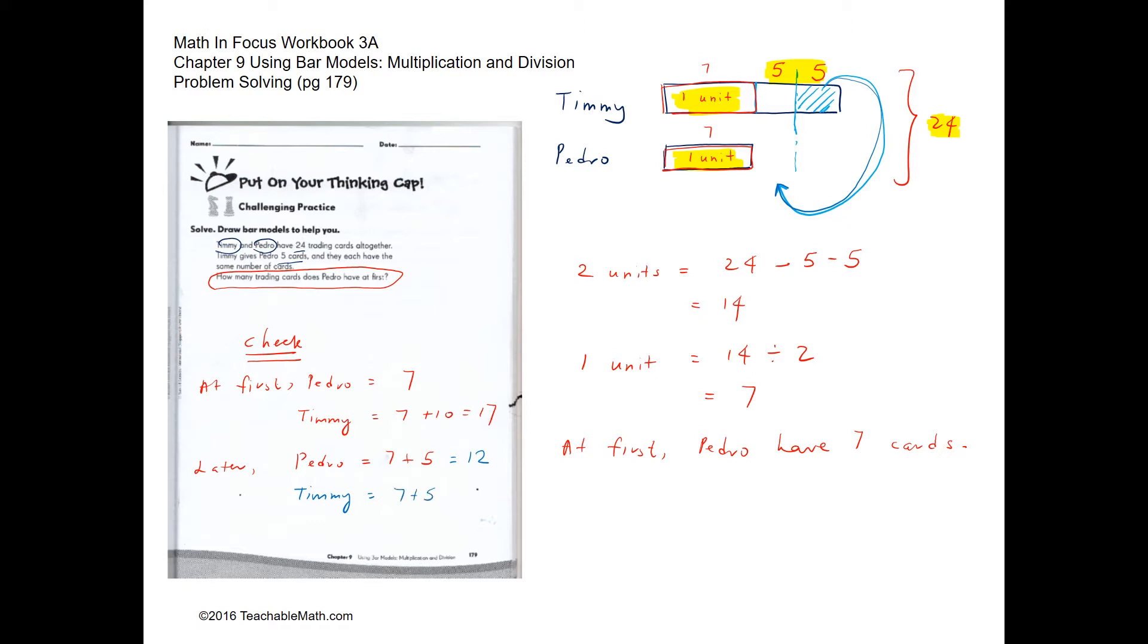And how much would Timmy have? Timmy would have only 7 plus 5, which is also 12, because he has given the 5 away to Pedro. So in this case, 12 and 12 also make 24, and now they have the same number of cards.